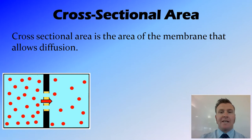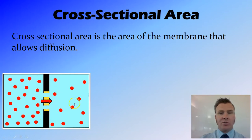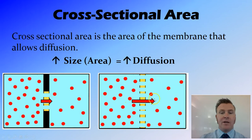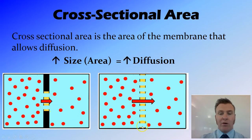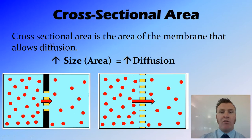The first thing we're looking at is the cross-sectional area — the area between these two cells that allows diffusion. Having a larger membrane or larger area is going to increase the amount of diffusion. So having the permeable membrane extend all the way across, rather than just a small section, means there is more diffusion happening from one cell into the other. Increasing the size or area of the membrane increases the rate of diffusion.